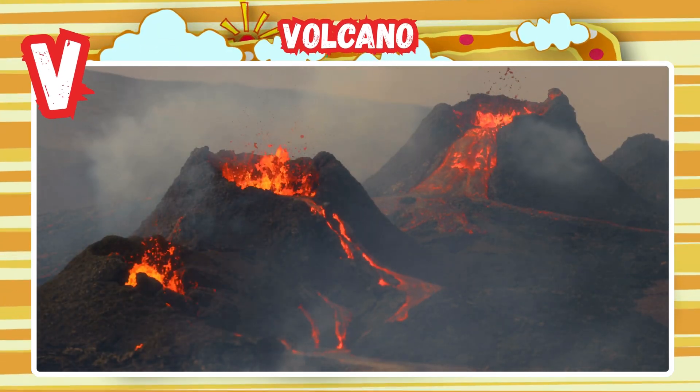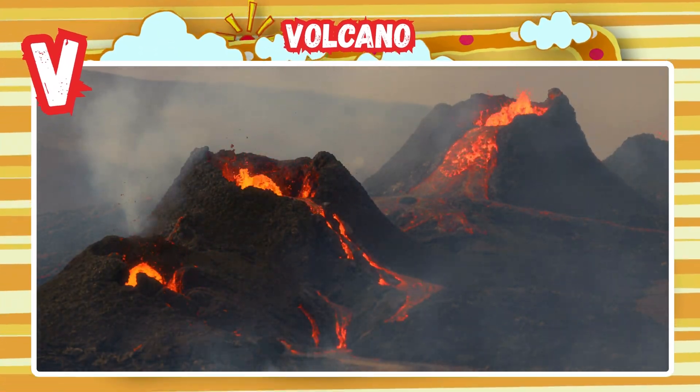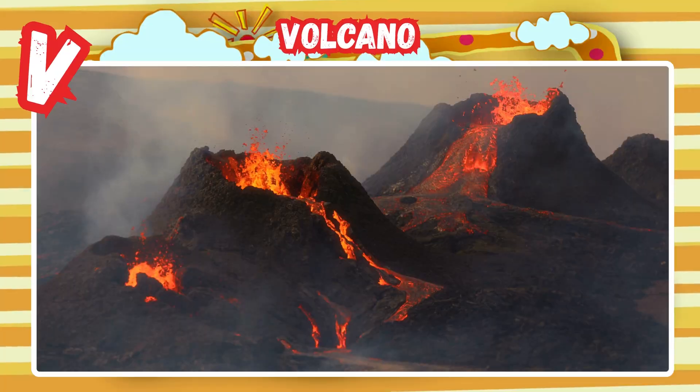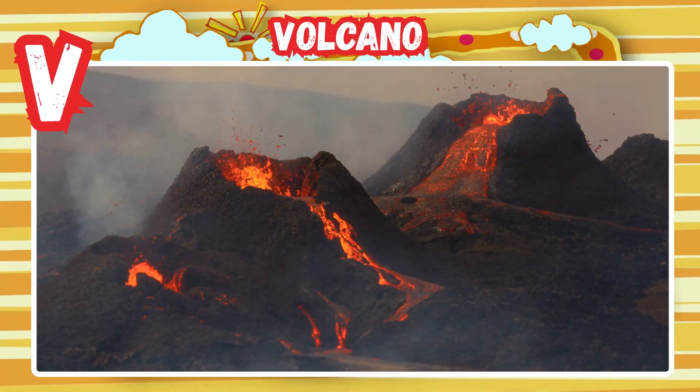V is for volcano. Hot lava comes out of the earth. Ash and rocks fall nearby.